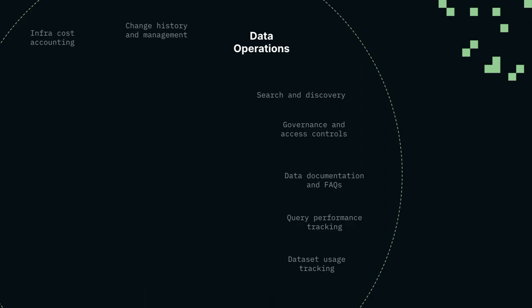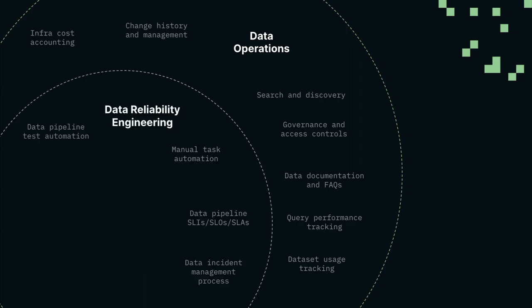Data reliability engineering is really a subset of what we call data ops — that operations layer. Data ops encompasses everything that has to do with working on data and providing necessary information about the data to work with it. Data ops encompasses things like cost management, governance, data discovery and understanding, documentation, performance. There are data ops teams and a suite of tools beyond data observability — data catalogs and cost management tools — all useful to make sure you know what your data looks like and can trust your data products. Within that world of data operations, we have data reliability engineering.